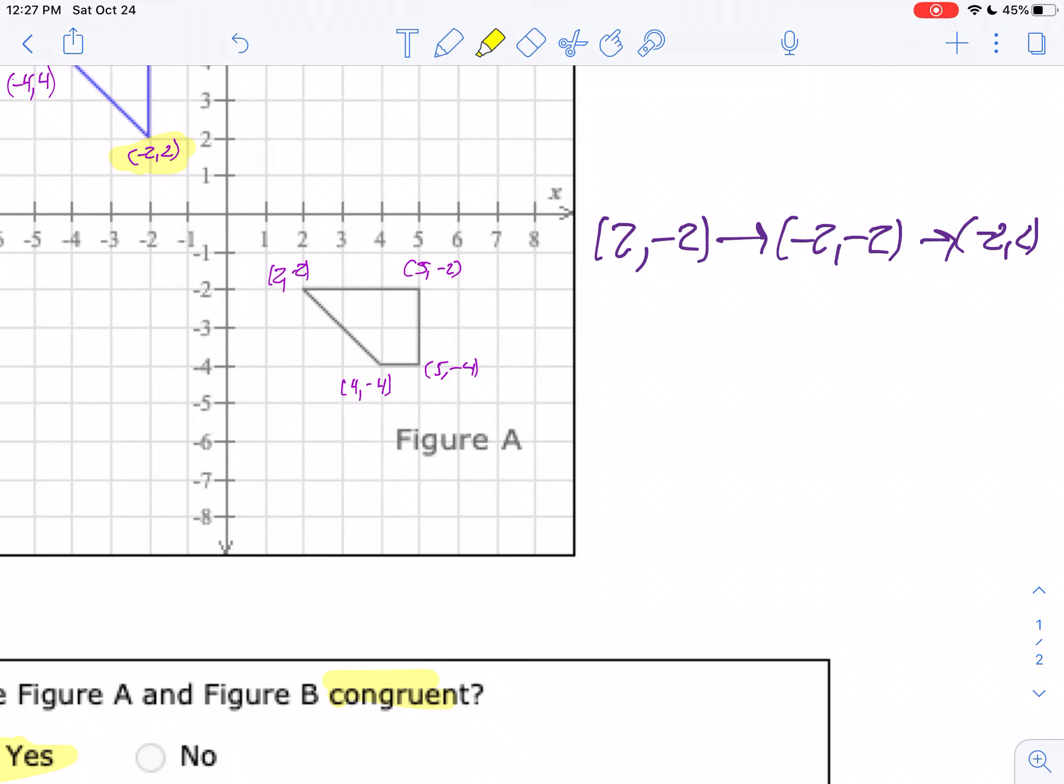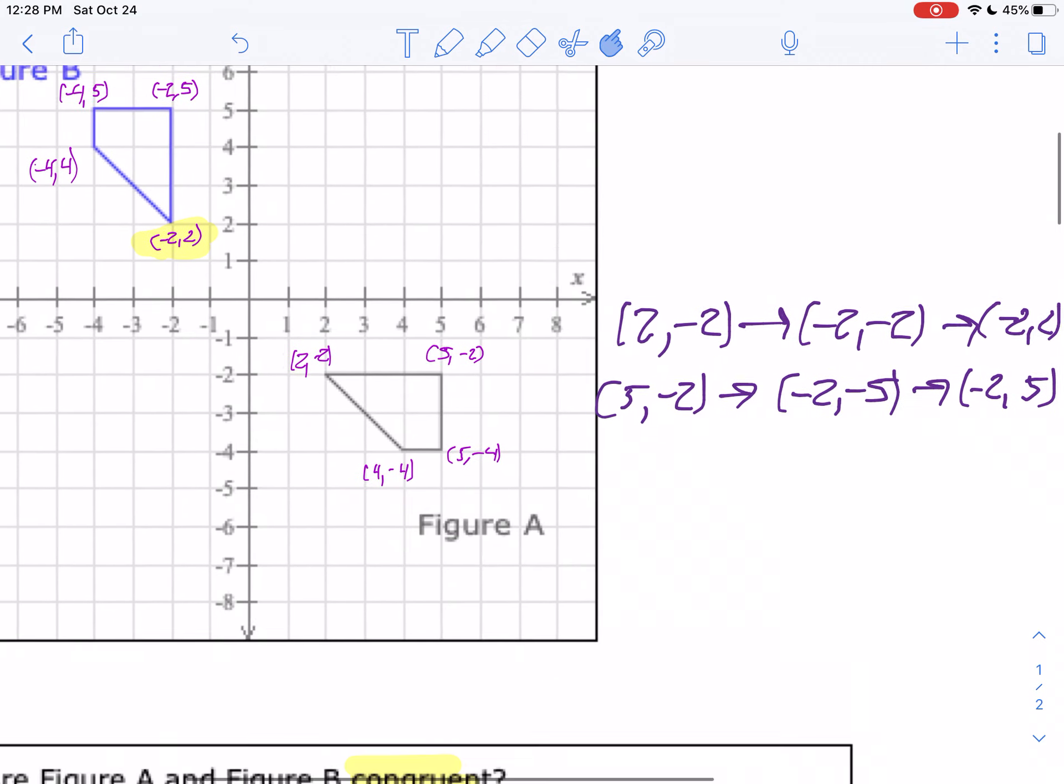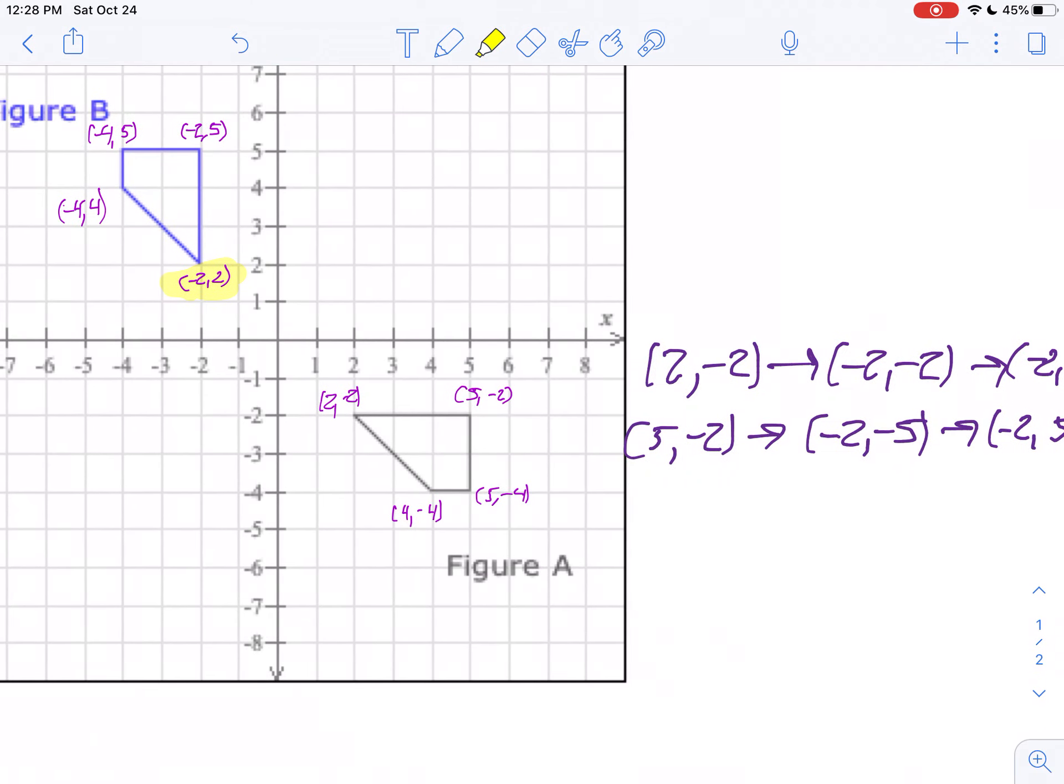Let's take a look at 5, negative 2. If I do a rotation of 90 degrees, that becomes negative 2, negative 5. If I reflect it over the x-axis, that becomes negative 2, positive 5. And look at it right there.